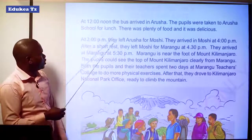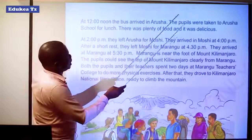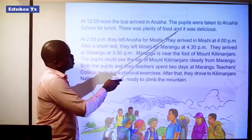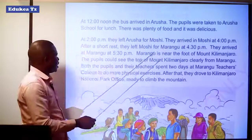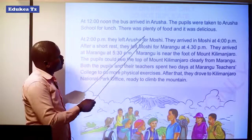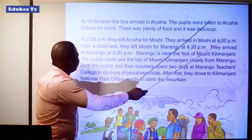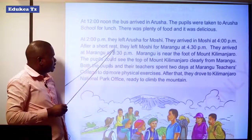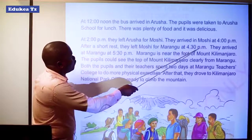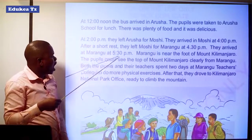At 12 o'clock noon, the bus arrived in Arusha. The pupils were taken to Arusha school for lunch. There was plenty of food and it was delicious. At 2 o'clock pm, they left Arusha for Moshi. They arrived in Moshi at 4 o'clock pm. After a short rest, they left Moshi for Marangu at 4:30 pm. They arrived at Marangu at 5:30 pm.